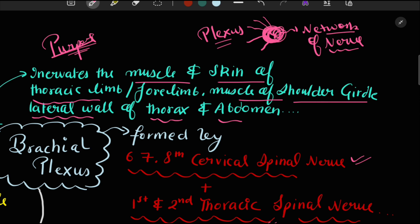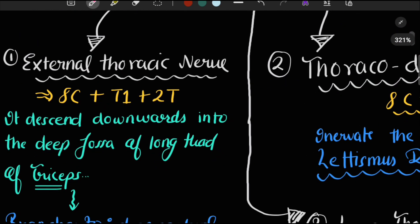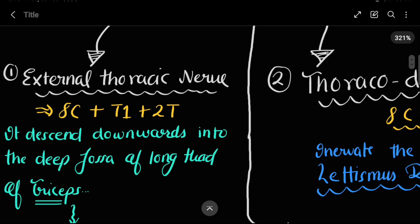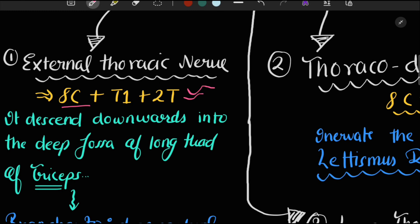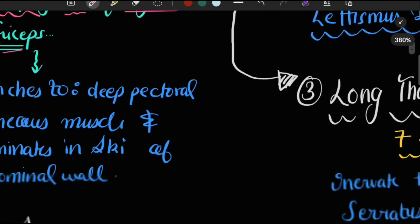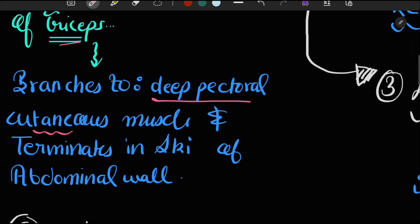Now we will study the branches arising from the brachial plexus. The first is the external thoracic nerve, which is formed by the eighth cervical, first thoracic, and second thoracic spinal nerves. It descends downwards into the deeper fossa of the long head of the triceps, giving branches to the deep pectoral muscle and cutaneous muscle, and terminates in the skin of the abdominal wall.